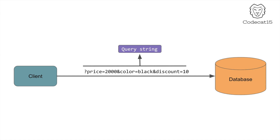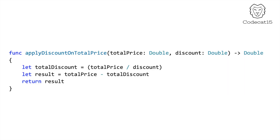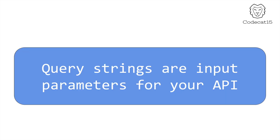A query string is just like function parameters — where you pass values into a function parameter and the function returns output based on those parameters. So in simple words, a query string is the input parameters of your API, and based on those input parameters your server will return output.